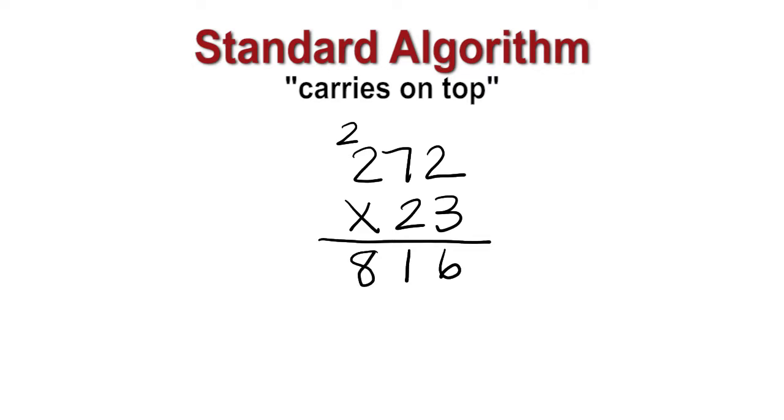As you can see, we have ignored or disregarded previous knowledge of place value and merely followed a step-by-step procedure. Now we're supposed to remember to put a 0 and then do the same thing, multiplying with the 2, which is really 20. 2 times 2 is 4, then 2 times 7 is 14, so we put down the 4 and carry the 1 on top, and then 2 times 2, add the 1 on top, which is 5, and then add it together, going from right to left, and the answer is 6,256.